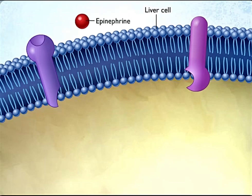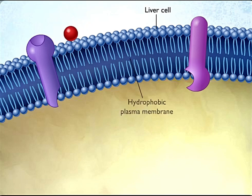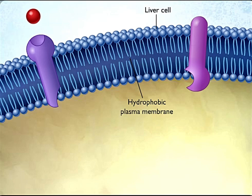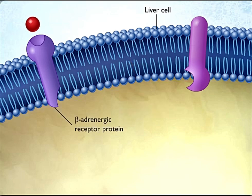Epinephrine is one of many hormones that is water-soluble, hydrophilic, and therefore unable to cross the hydrophobic plasma membranes of its target cells. Instead, it binds to receptor proteins located in the plasma membrane and does not enter the cell.